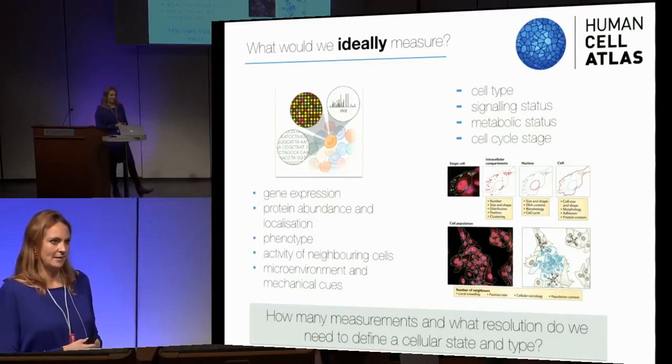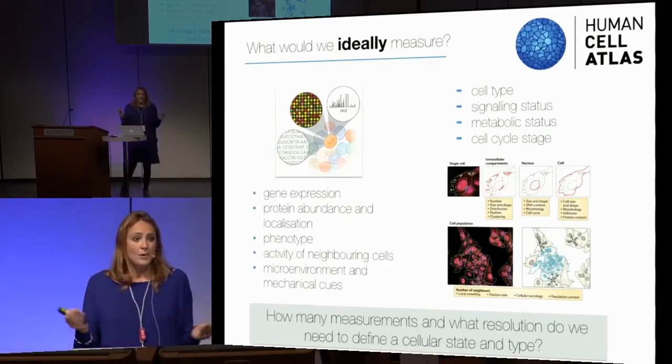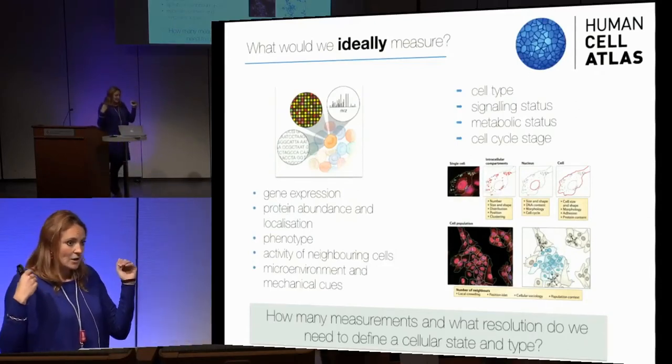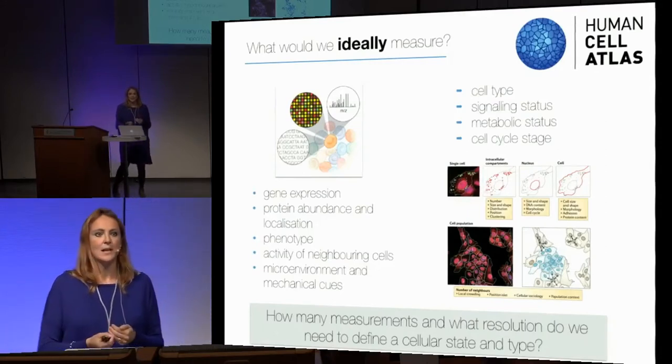Going back to something Dana pointed out — dimensionality reduction and really feature selection: how many measurements do we really need to define a cellular state, and at what resolution? Do we need cellular resolution or sub-cellular resolution? Can we computationally find the genes that could really explain everything? I don't believe we need a full gene expression profile to define whether a cell is in a certain state — there will be key measurements that are important to define it.